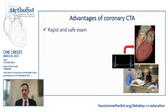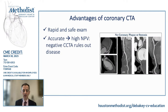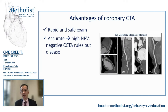Coronary CTA has several advantages. First, it is a very rapid exam — image acquisition takes only a couple of seconds and is very safe. We may give beta blockers to slow the heart rate and nitroglycerin to dilate the coronary arteries, but overall it is very well-tolerated. It's also highly accurate. For over 15 years, we've highlighted its negative predictive value: if a coronary CTA shows no plaque and no stenosis, it is incredibly reassuring — arguably the most reassuring test in all of clinical cardiology for chest pain patients.